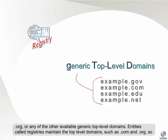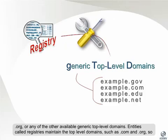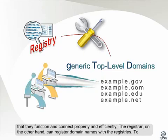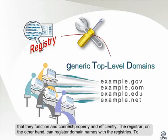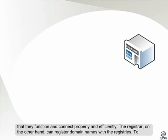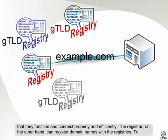Entities called registries maintain the top-level domains, such as .com and .org, so that they function and connect properly and efficiently. The registrar, on the other hand, can register domain names with the registries.